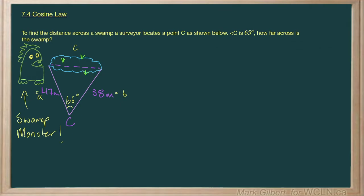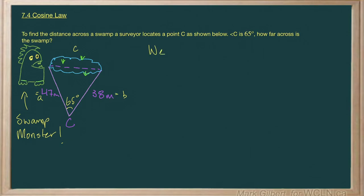So we're going to use the cosine law. The reason why we're using the cosine law is we have side, angle, side. And remember that is one of the two scenarios in which we use the cosine law. So let's set it up. We have C squared is equal to A squared plus B squared minus 2AB cosine of C.